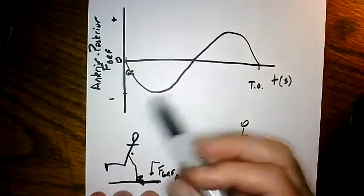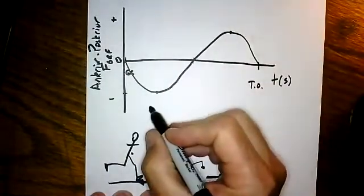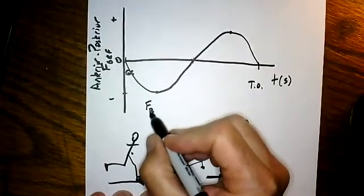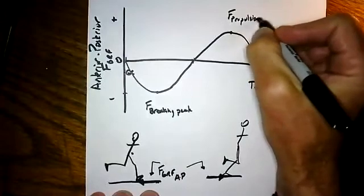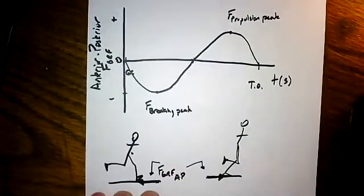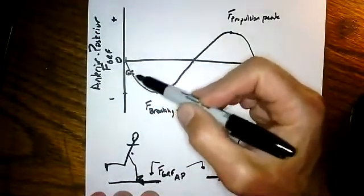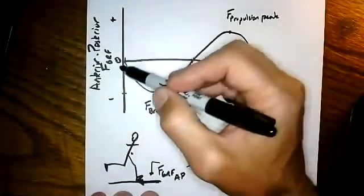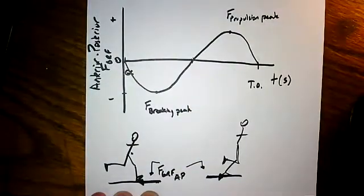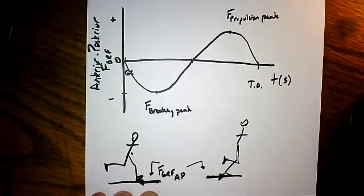We can identify peak forces — this would be F braking peak and this would be F propulsion peak. There are some intricacies in the first part of this curve when looking at actual data, but in general all forces from the moment the foot hits the ground are considered negative. There can be unique details that complicate this, especially if there's a period of double support where the other foot is in contact with the ground, which can really change what happens initially with the ground reaction force profile.